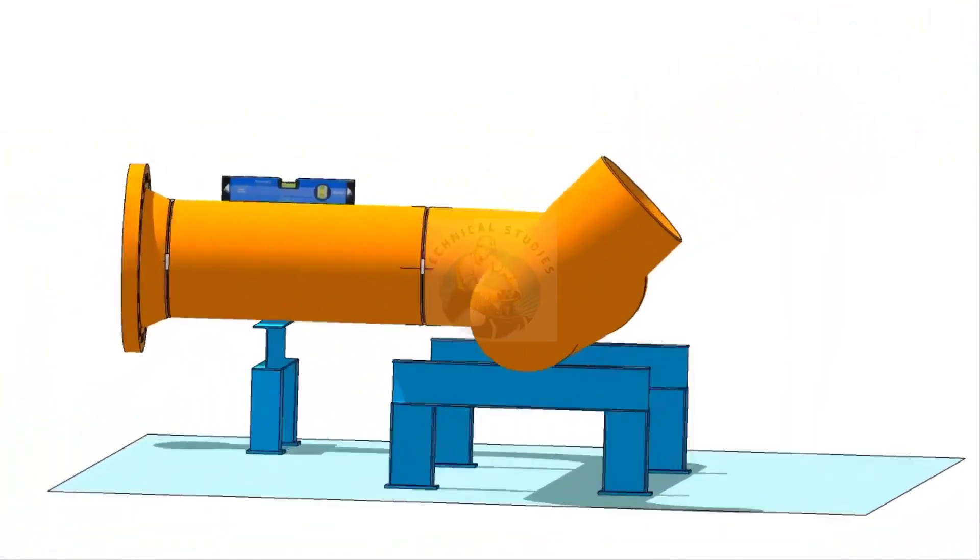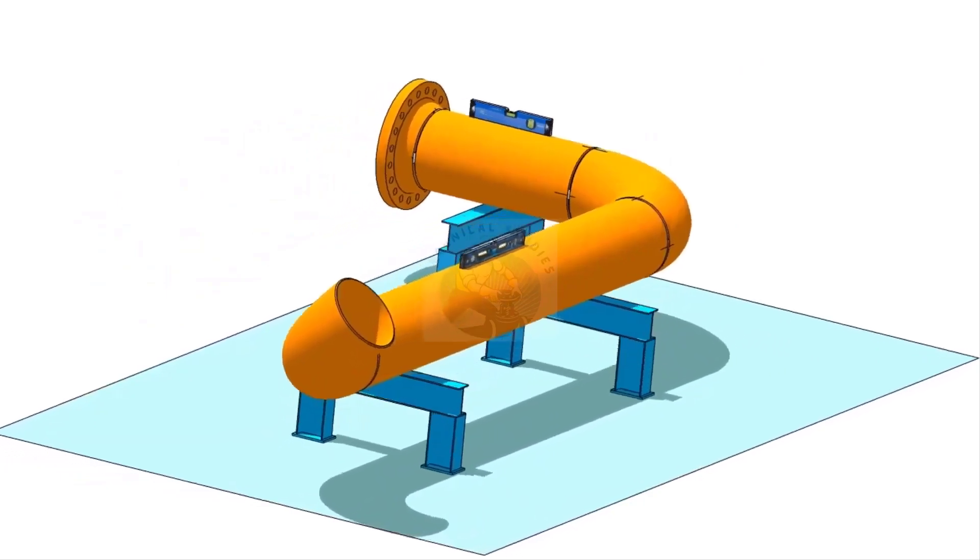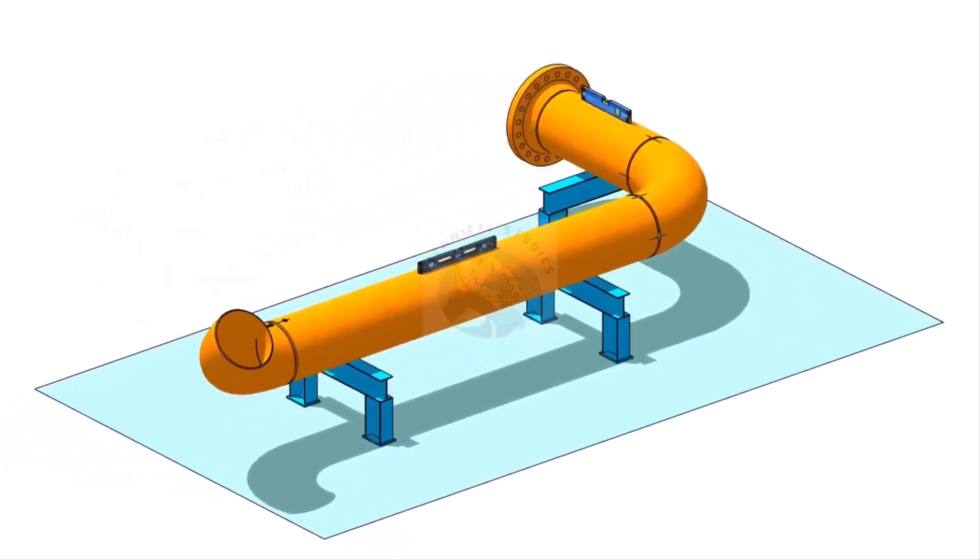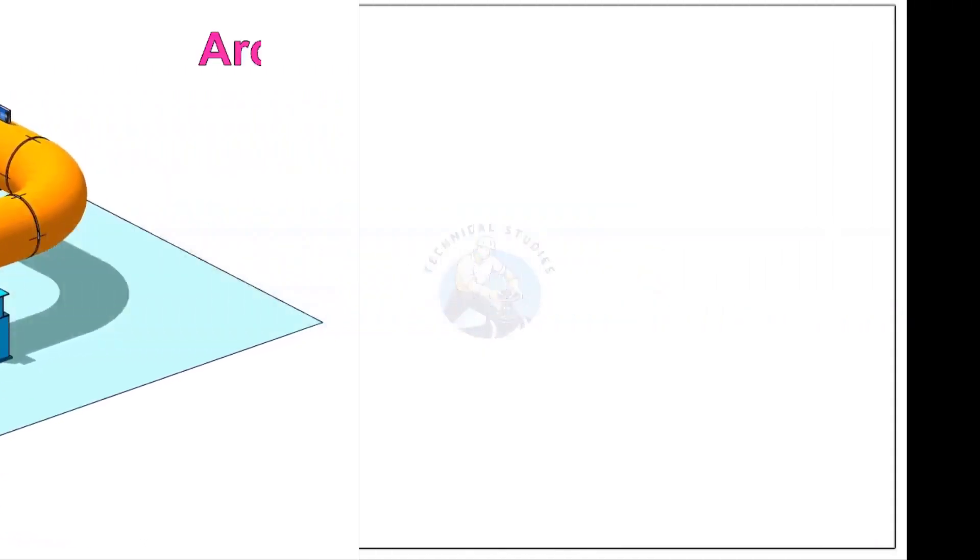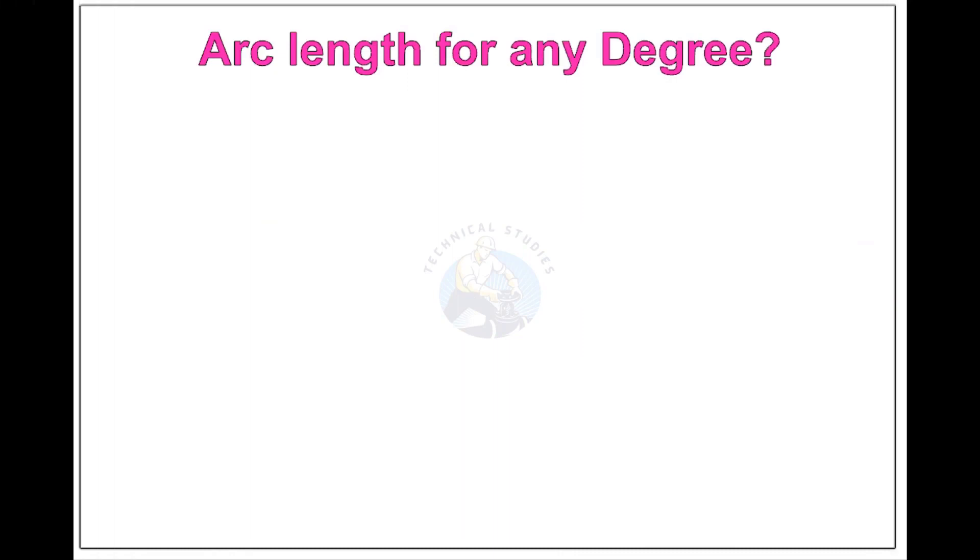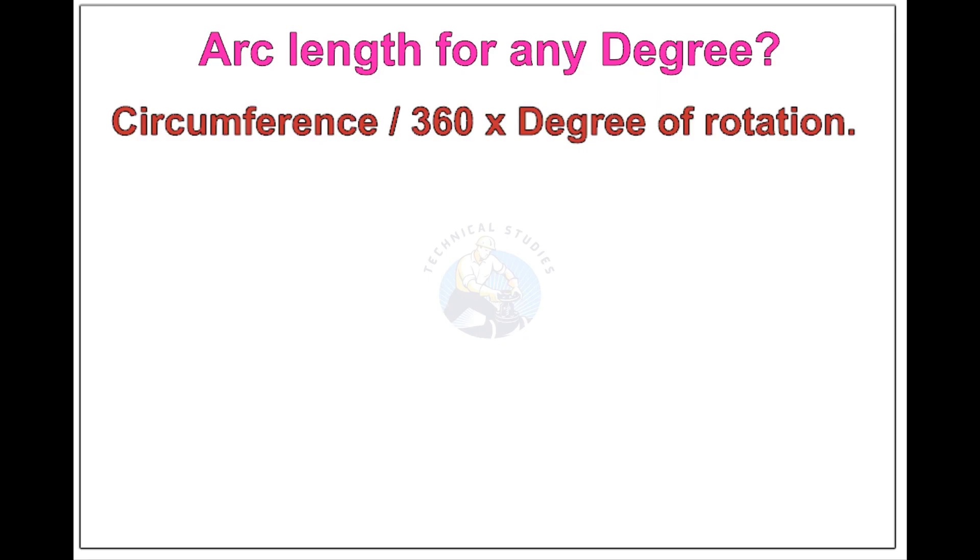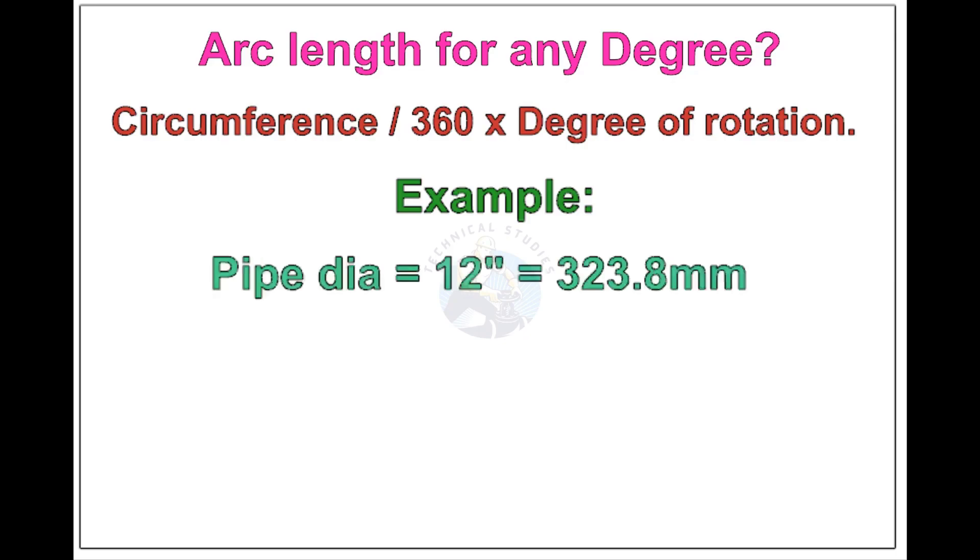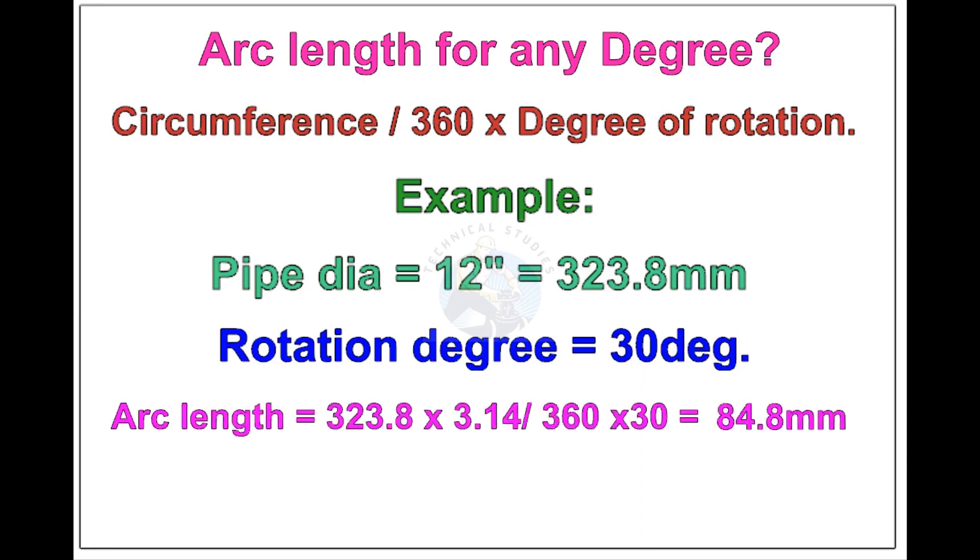Now, see the formula and calculations for finding the arc length of any degree rotation, with example. Arc length for any degree: Circumference of the pipe divided by 360 times the degree of rotation. Let us check the arc length of 12 inch pipe rotated 30 degrees. Apply the formula. The answer is 84.8 millimeters.